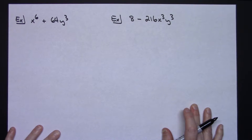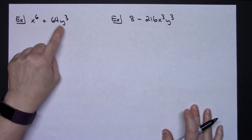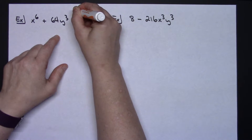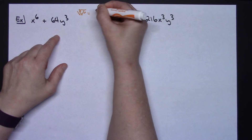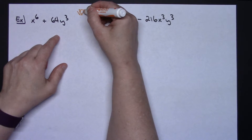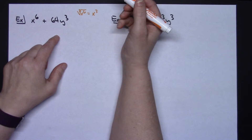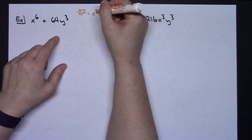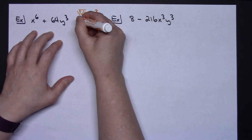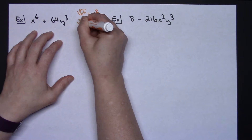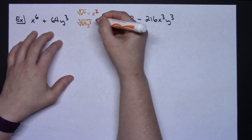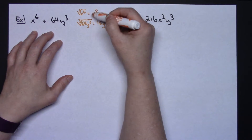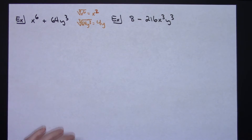In this next example I have a sum, and looking at both terms I have perfect cube roots. The cube root of x to the sixth: divide the exponent 6 by 3 to get x squared. The cube root of 64y to the third: cube root of 64 is 4, and cube root of y to the third is y. So I have x squared and 4y — those are my a and b values.